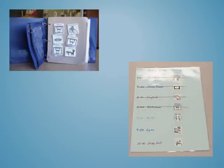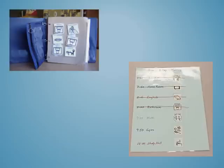Here are two more examples. One is a visual schedule in a notebook format, useful for someone in high school or when you need multiple pages to represent different sequences of activities. On the right is another format that uses pictures and text for older learners — as each item is completed, instead of removing the pictures, you simply draw a line through what was completed, letting the learner know what comes next and what's still left for the day. That concludes this module on visual schedules. I appreciate your time. I hope you find this of use.